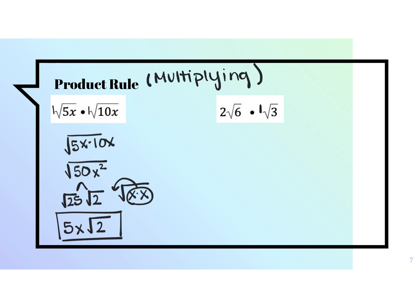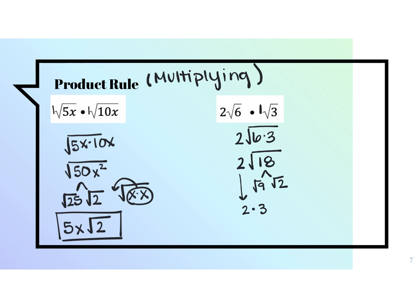Let's look at the next one. Number out front times number out front: 2 times 1 is 2. Number underneath times number underneath gives me 2 square root of 18. Now we're going to try to split 18 up — the perfect square from my list that goes into 18 is 9, and 9 times 2. The square root of 9 is 3. I still have this 2 out front — when you have two numbers out front, remember to multiply them. And then I have the square root of 2 which I can't simplify. So last step: 2 times 3 gives me 6 square root of 2.